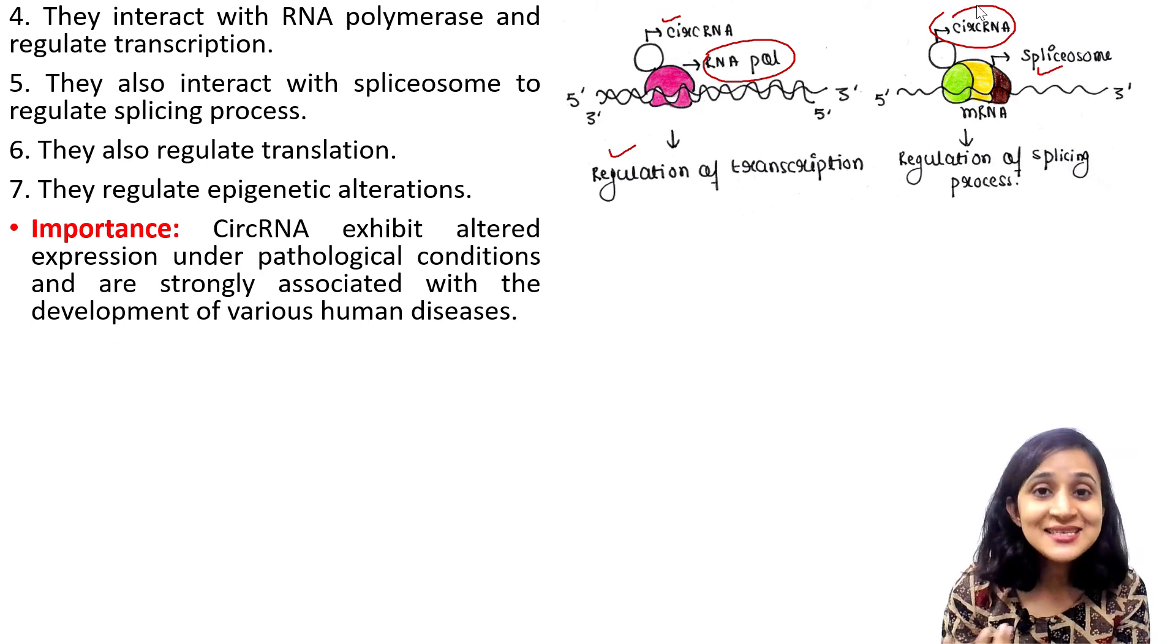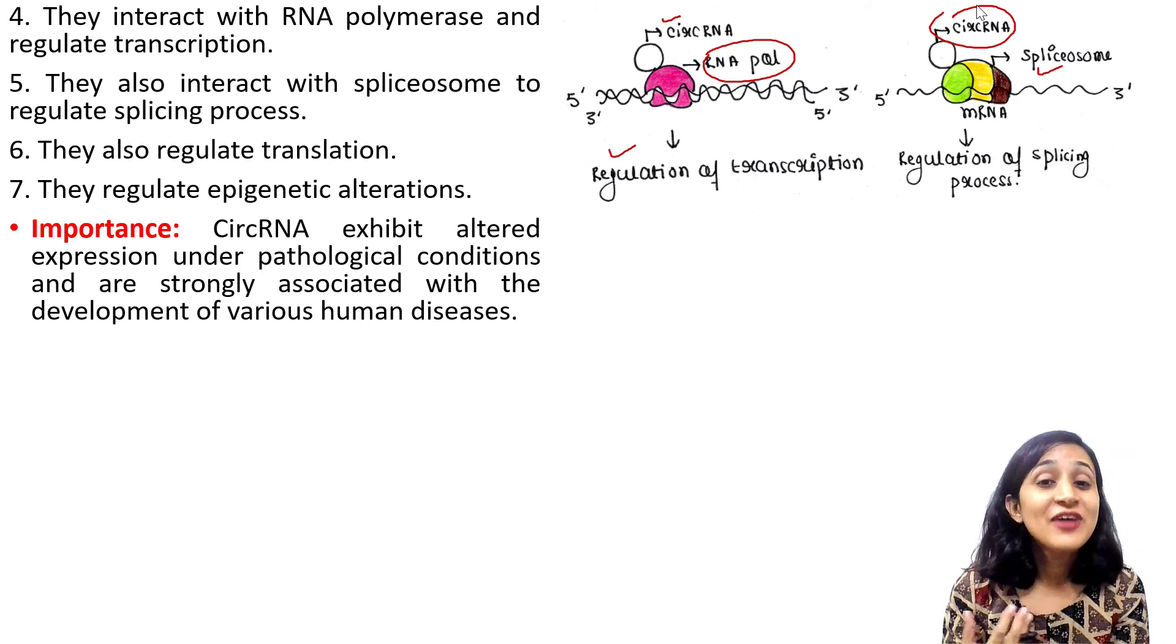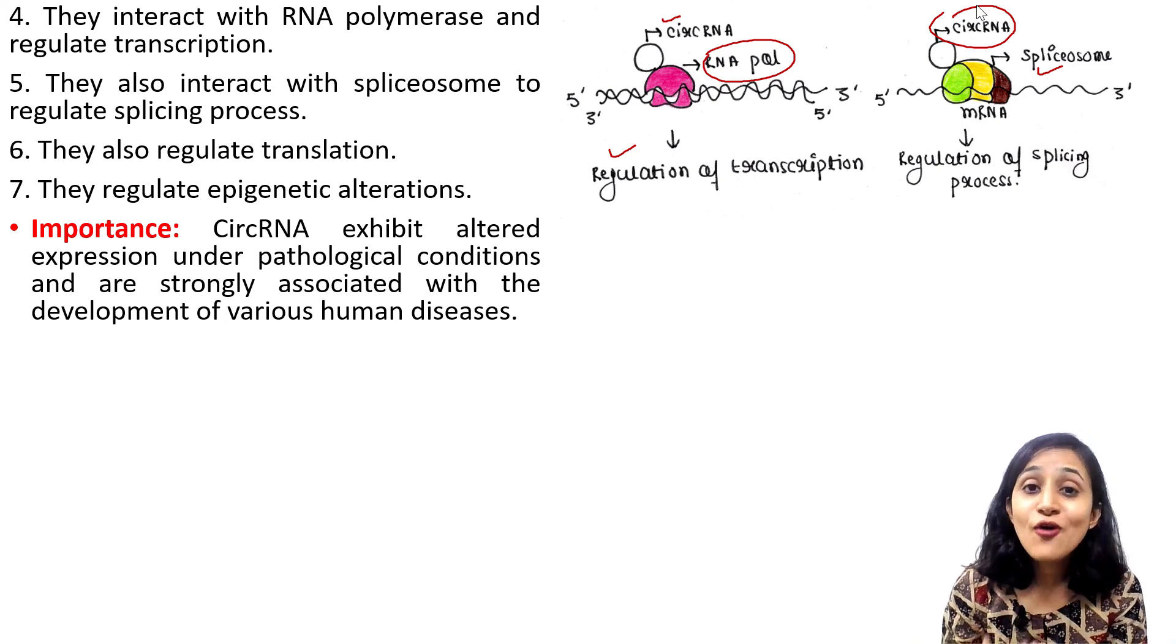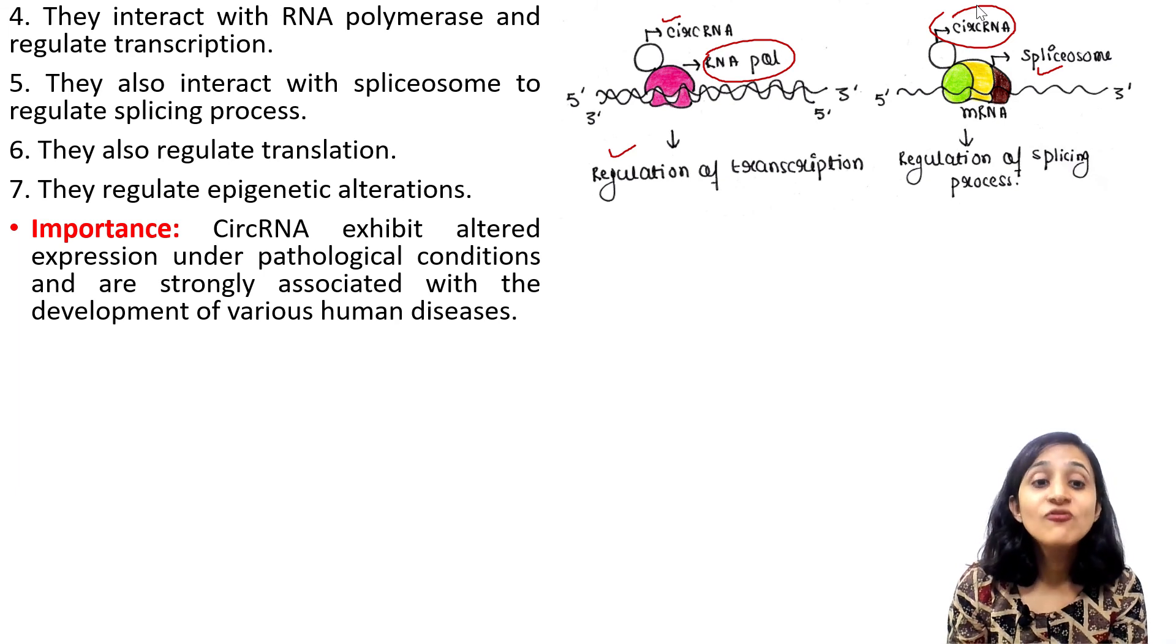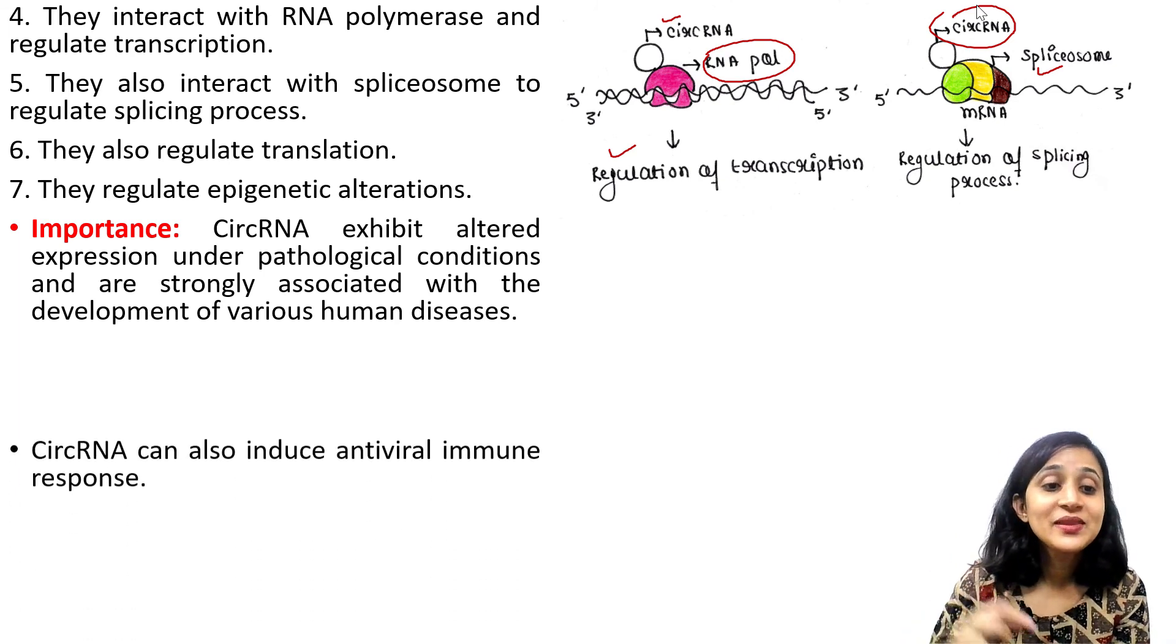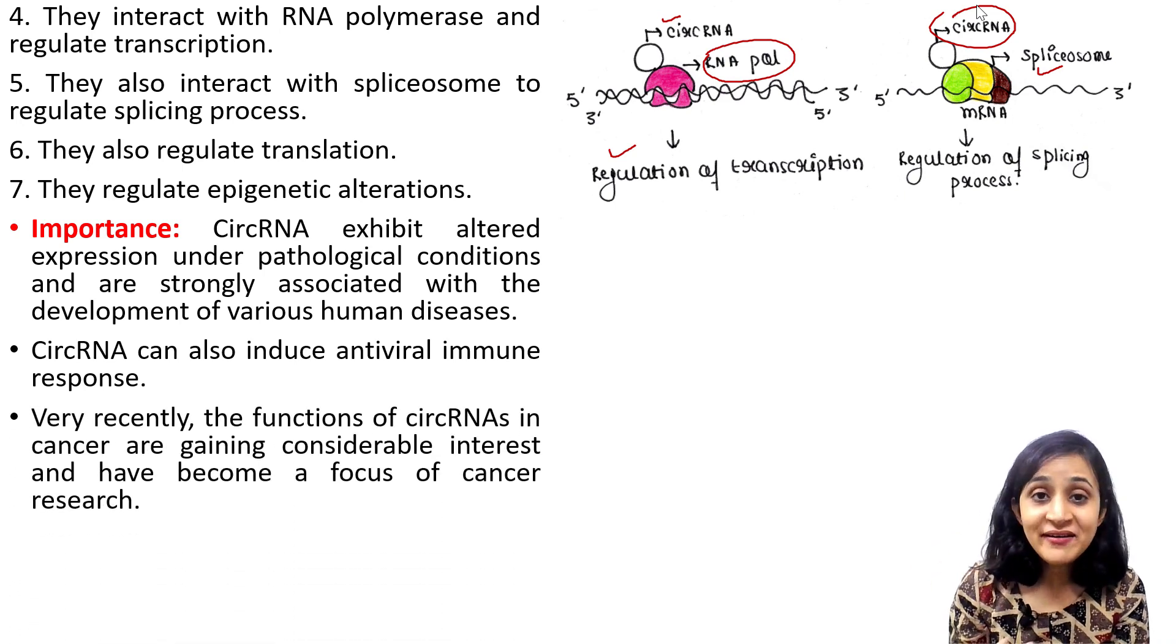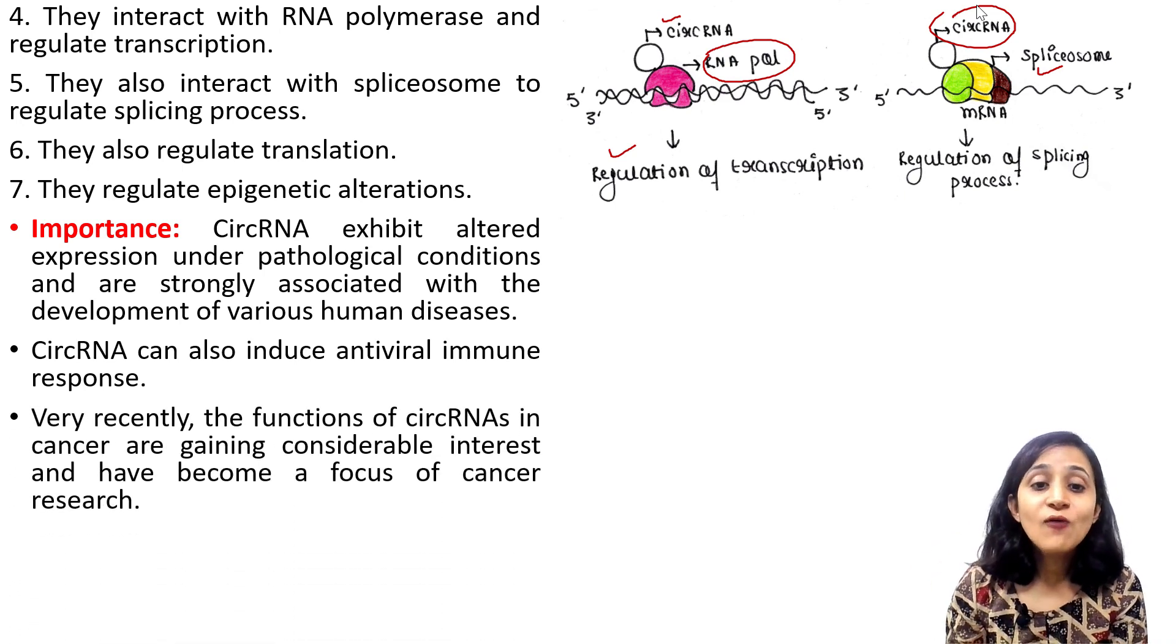Importance. Why is this important? What is its significance? Circular RNA exhibits altered expression under pathological conditions and is strongly associated with the development of various human diseases. Circular RNA can also induce antiviral immune response.